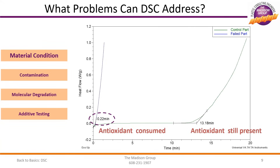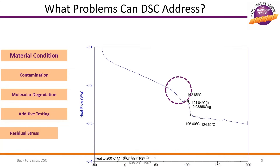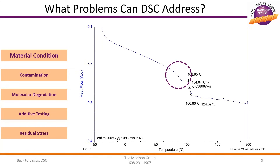In some cases, the presence of residual stresses will manifest as unexpected transitions in the DSC curve. It should be noted that these additional transitions may be difficult to interpret and may require different setups and modes of DSC testing for proper analysis. In addition, to guarantee proper interpretation, the Madison Group may suggest confirming the cause with additional test methods.